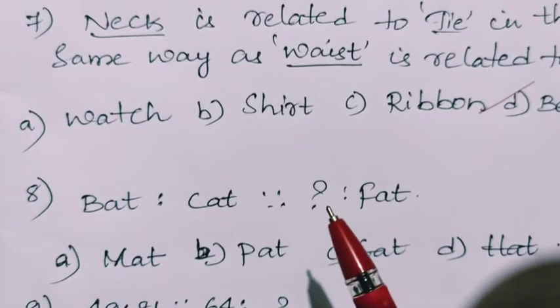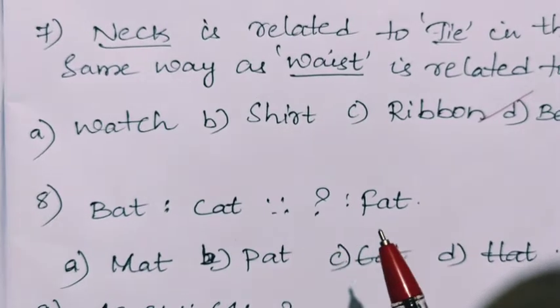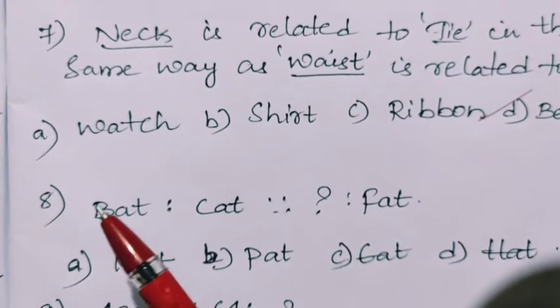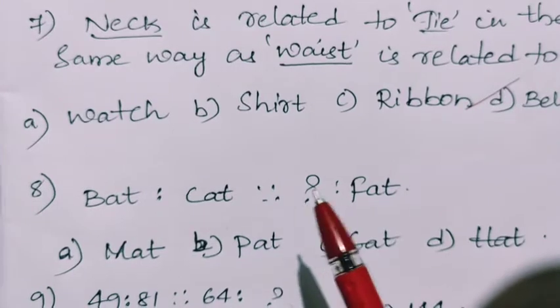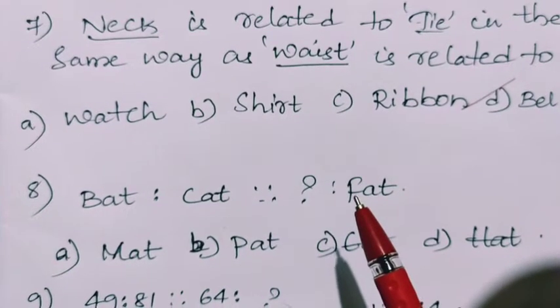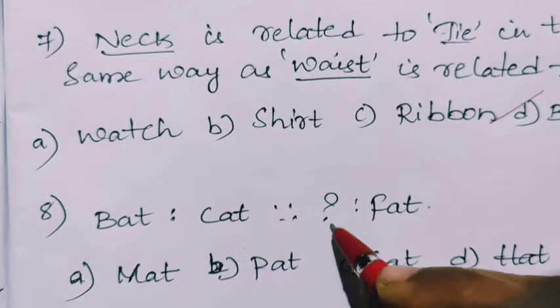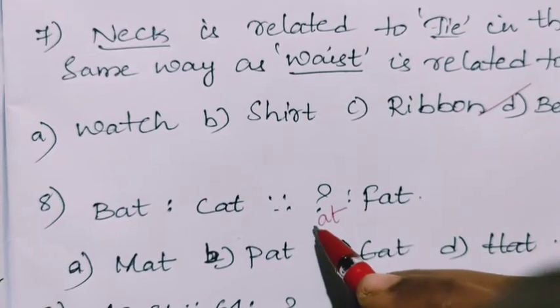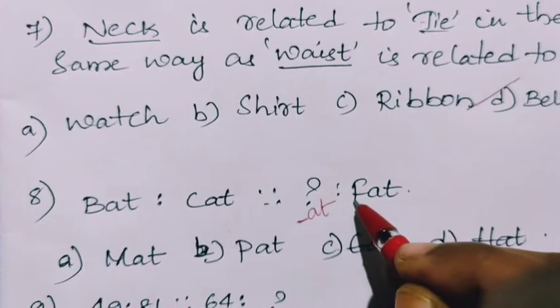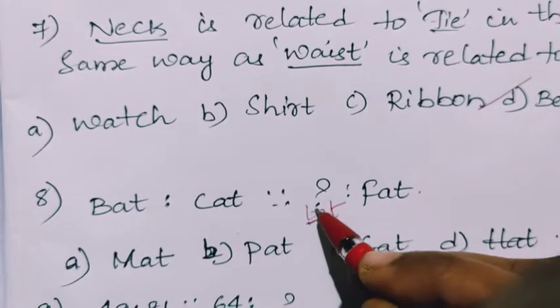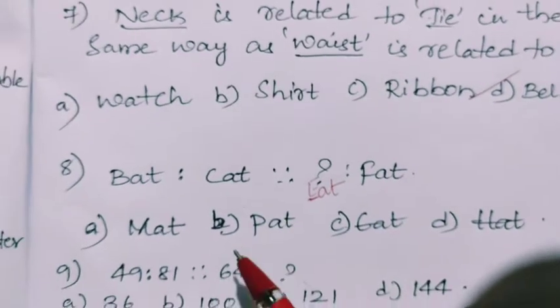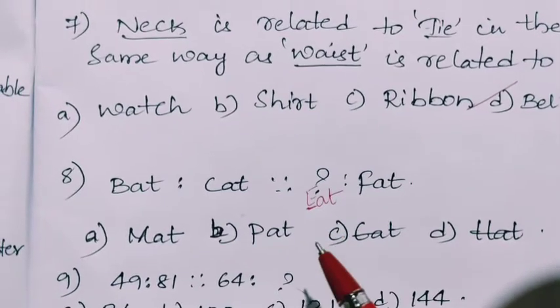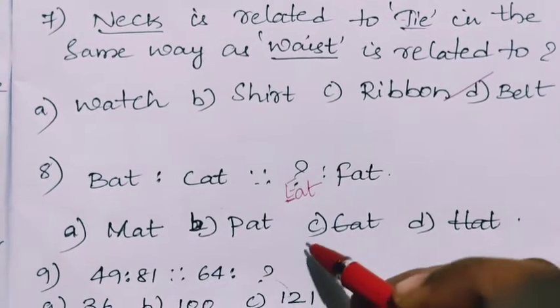So we have to find out the third word. So here B, C, so before F it should be E. So A-T will be common. The letter which we have to add here, before F it is E. So in this manner also the question will be in analogy, so the answer is E-A-T.